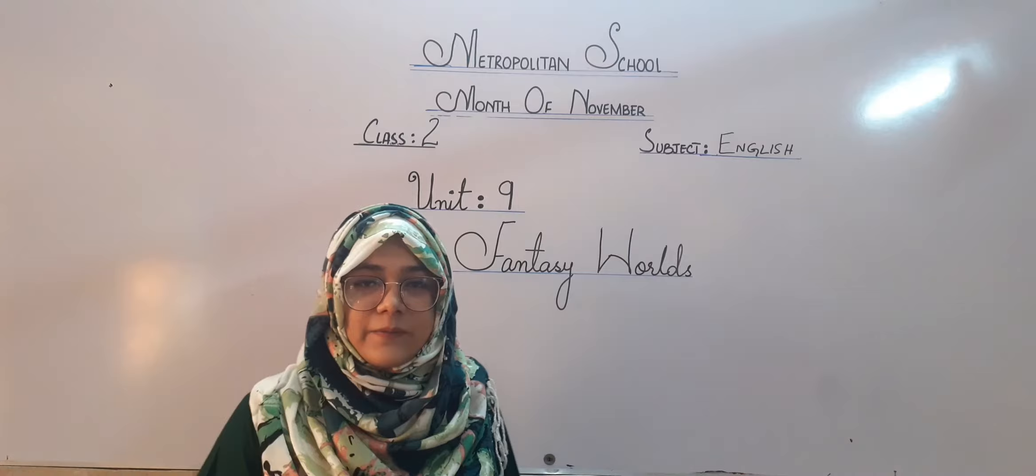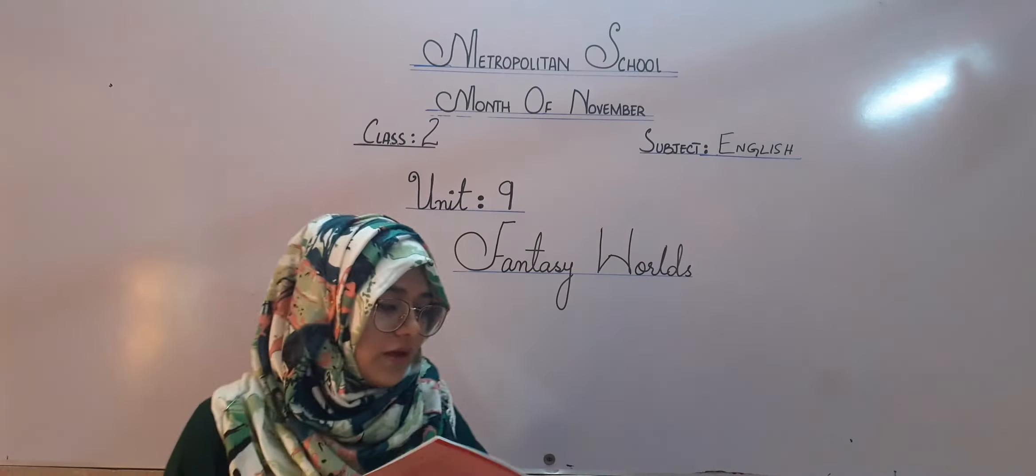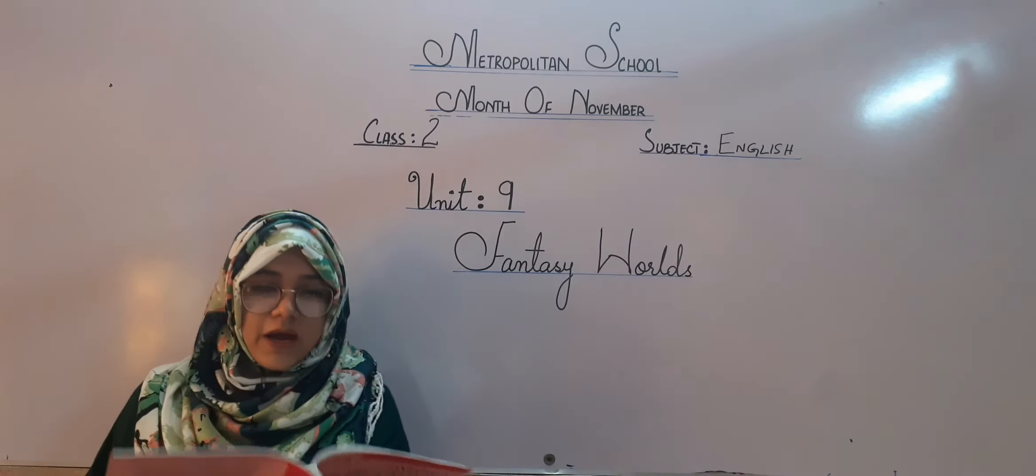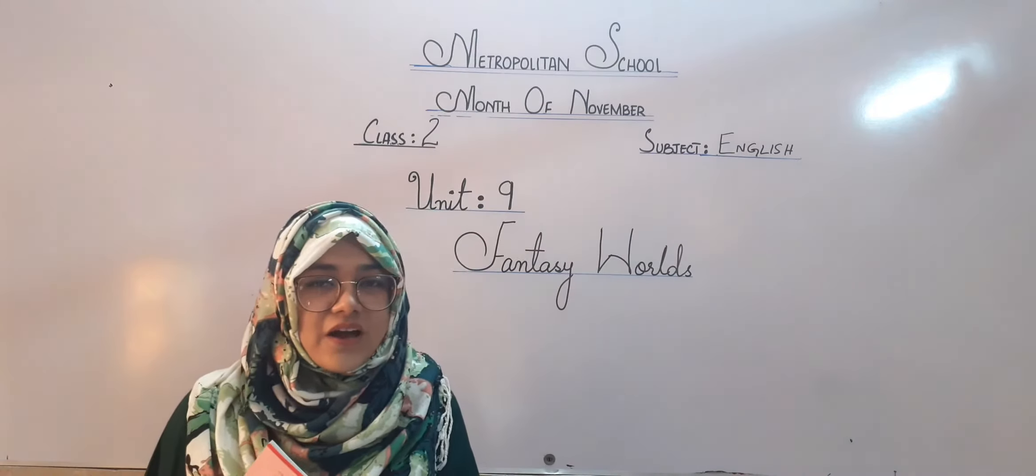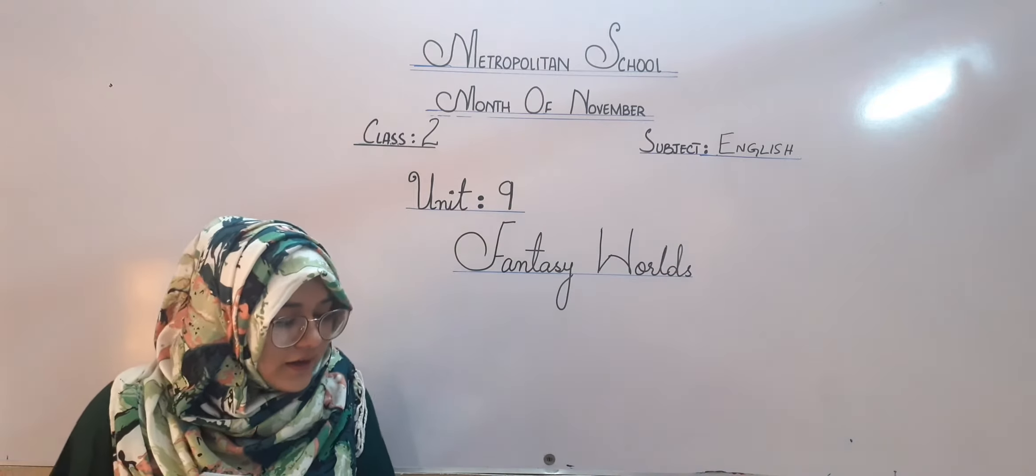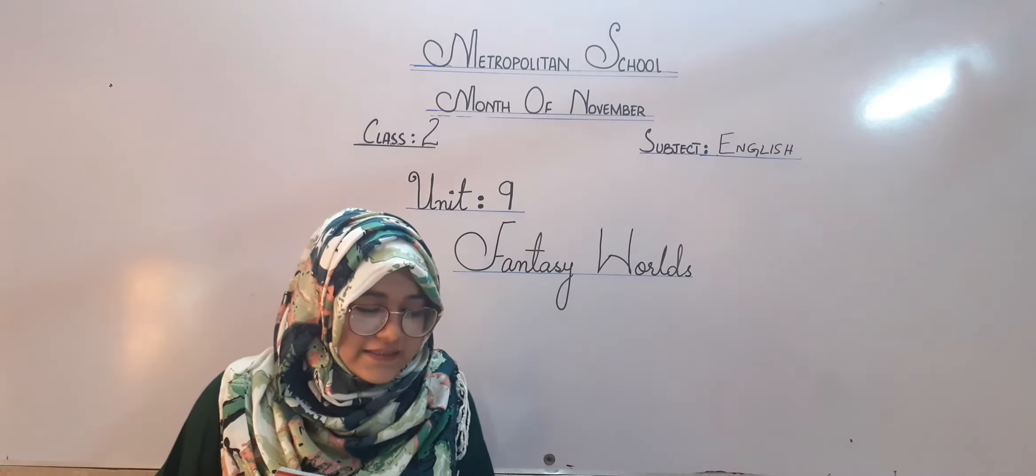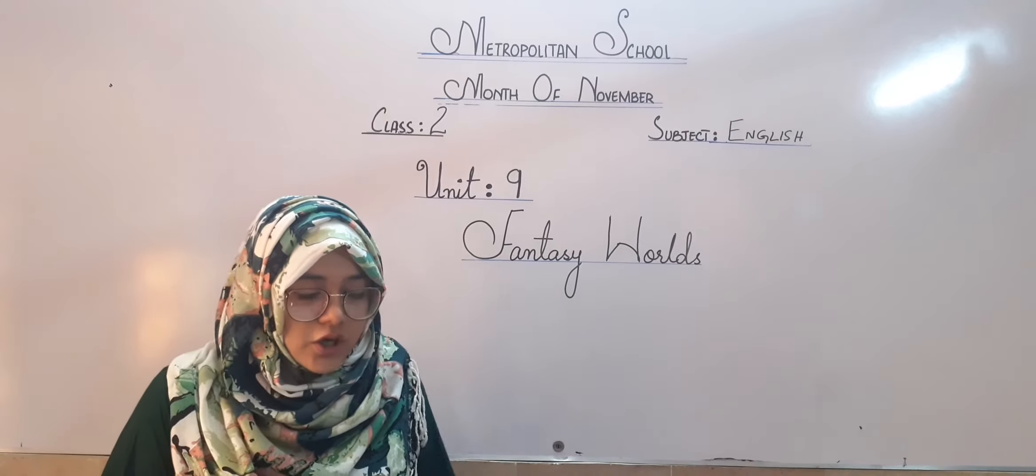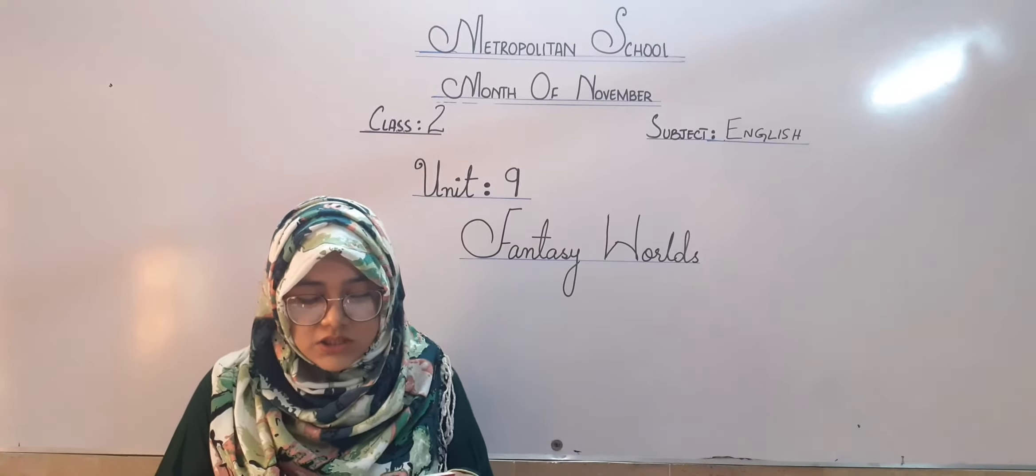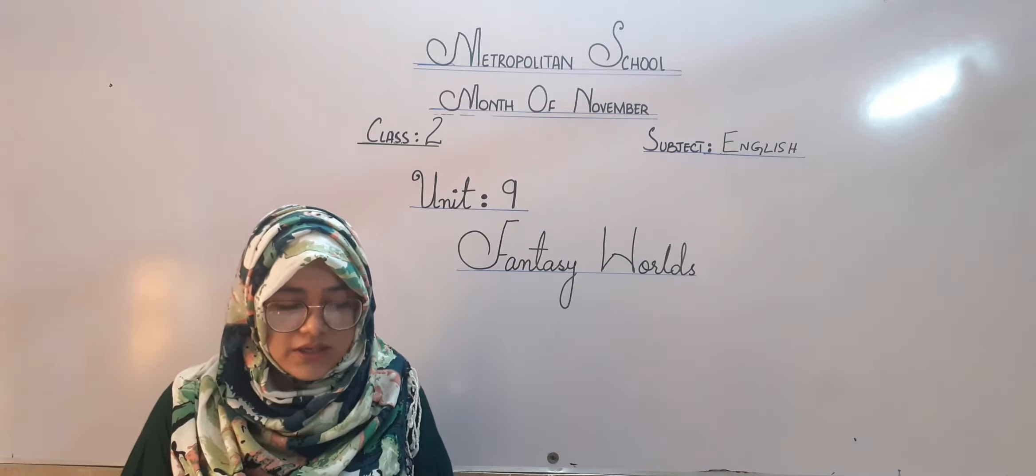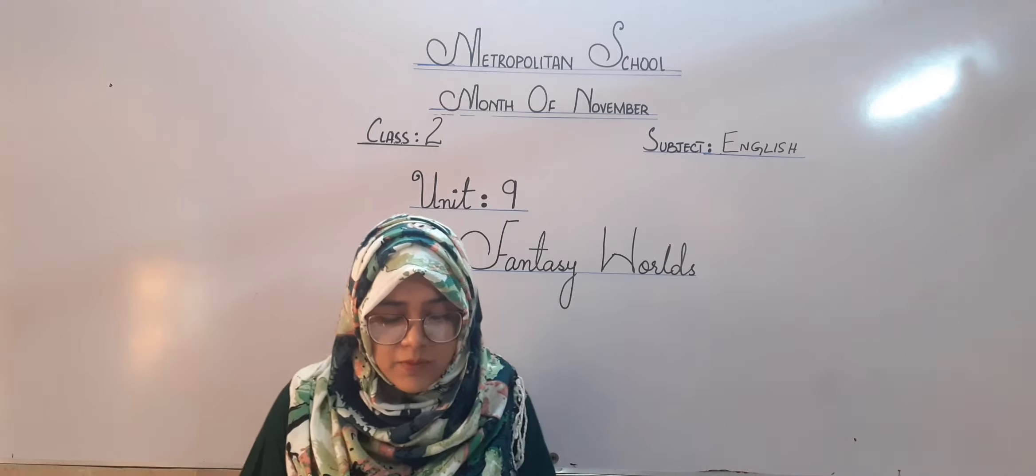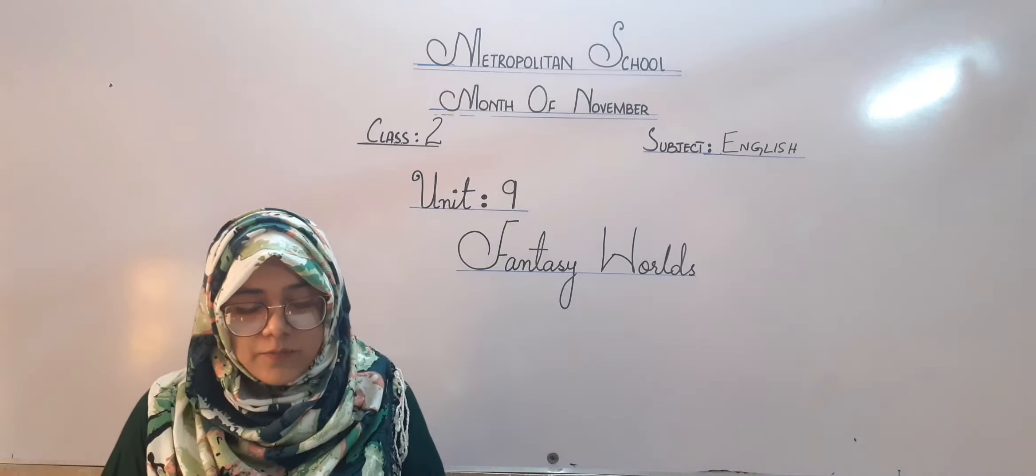So let's start with the reading. So students come on, grab up your books and open page number 52 because I am going to start the reading today. Unit number 9, lesson 3, Noor's new sword. Noor had a new plastic sword. It was silver colored with a flashing red jewel in the handle and it came in a beautiful golden case.